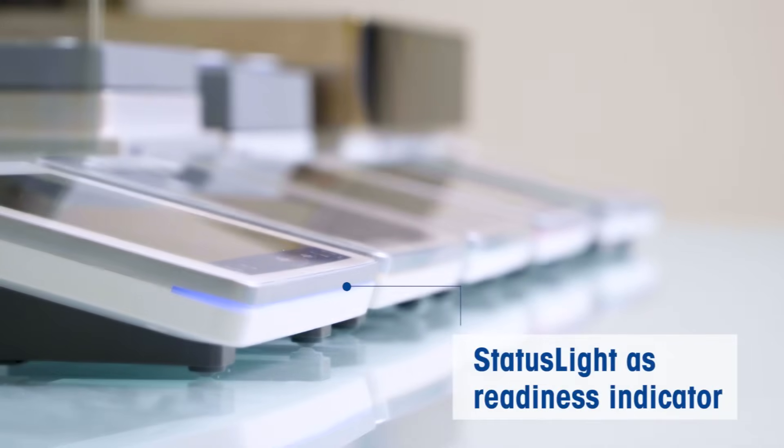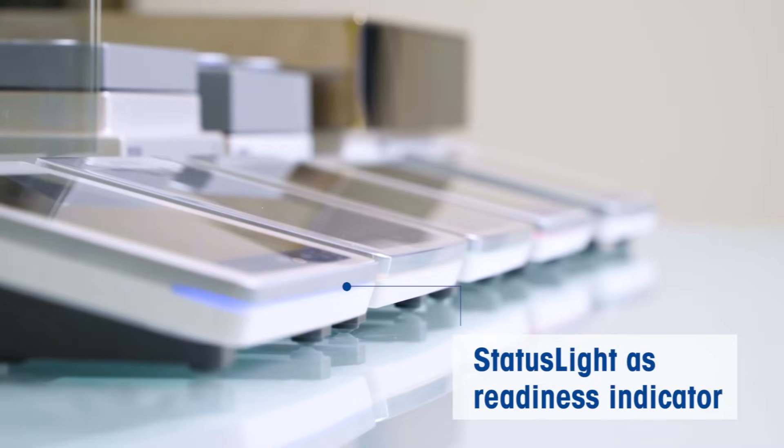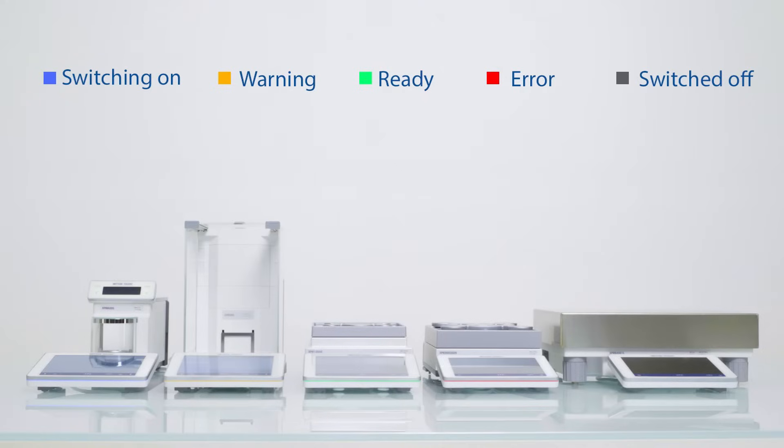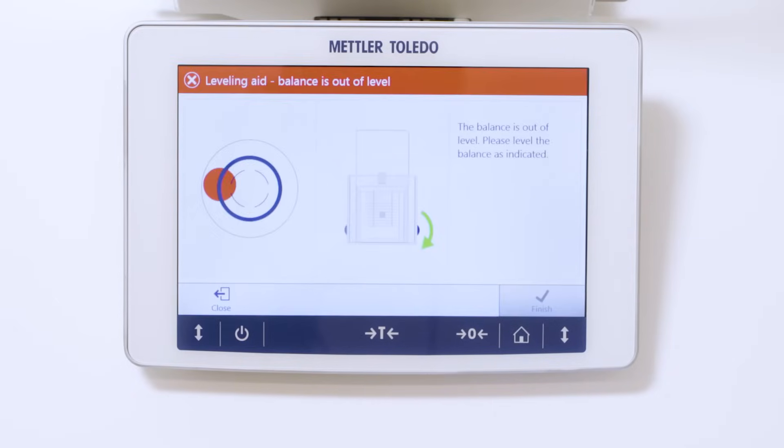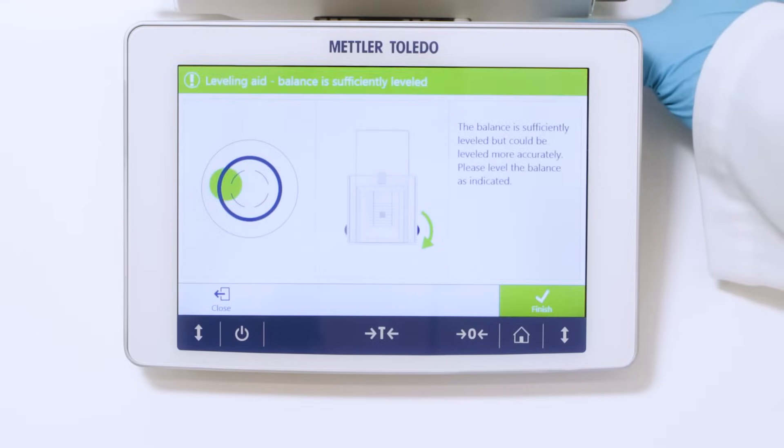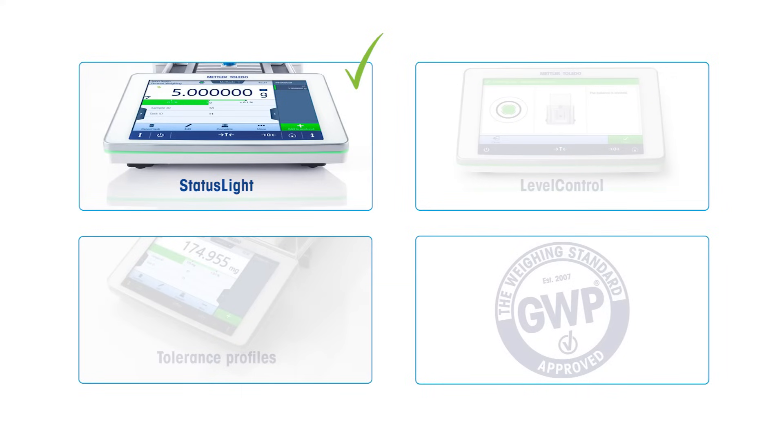XPR balances include four built-in quality assurance features that help to make your process audit-proof. The first is the color status light that shows if your balance is ready at one glance. Next, level control will warn you if the balance is not leveled. Thanks to the graphical guide, leveling is a matter of seconds.